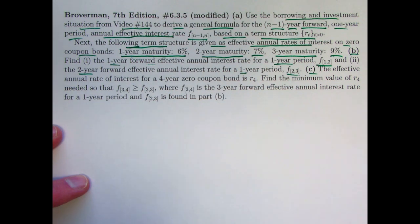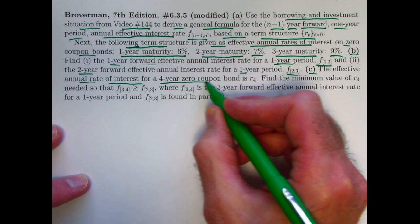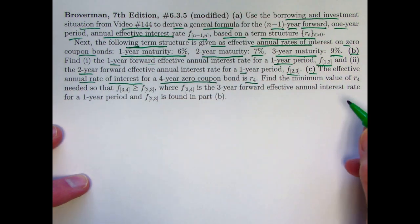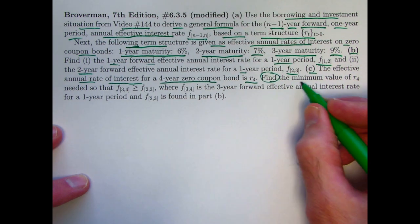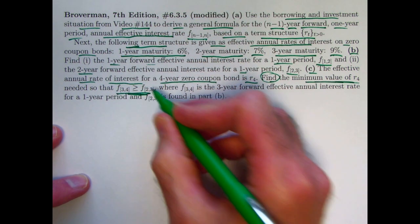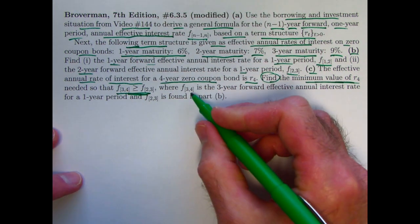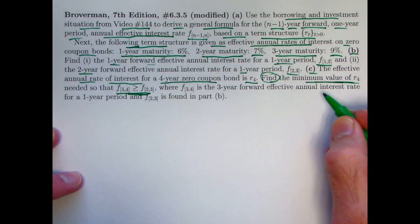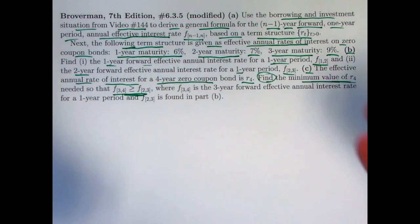Then in part C, we're going to solve an inequality, essentially. The effective annual rate of interest for the four-year zero-coupon bond is R4. That would be what we call a spot rate. That would be part of the term structure. Find the minimum value of R4 needed so that this is true, where F2-3 is the forward rate that was found in part B. And F3-4, this would be what's called a three-year forward rate for the one-year period from time 3 to 4. The three-year forward rate means it's in the future by three years.